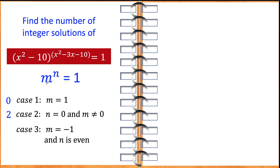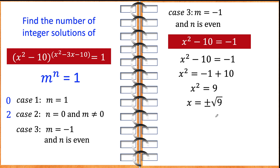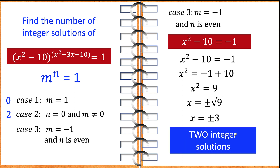For case number 3, the base is negative 1 and the exponent must be even, because negative 1 raised to an even exponent equals positive 1. So we set x squared minus 10 equal to negative 1 and solve for x. Adding 10 to both sides gives x squared equals 9, and taking the square root gives x equals plus or minus 3. There are potentially two integer solutions, but we must verify that the exponent is even for both x equals positive 3 and x equals negative 3.